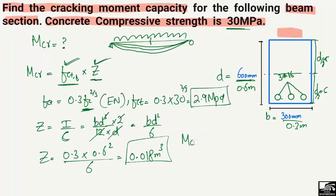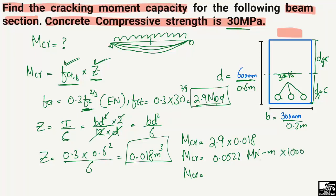Now substituting into the cracking moment formula: 2.9 MPa × 0.018 m³ gives M_cr = 0.0522 MN·m. Multiplying by 1000 to convert (since 1 MN = 1000 kN), the cracking moment capacity equals 52.2 kN·m. This is the moment capacity of the beam before the first crack occurs in the concrete.